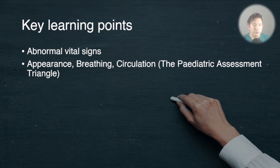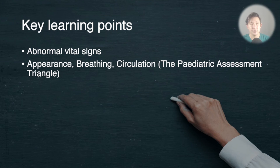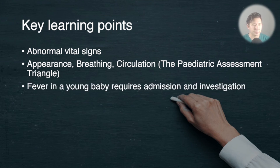I'm going to go through the paediatric assessment triangle in another video. This basically talks about looking at the appearance, breathing, and circulation to work out whether a child is unwell. I want you to keep those in your head — appearance, breathing, and circulation — those are the three categories you need to look at when you first look at a child to see if they're unwell.